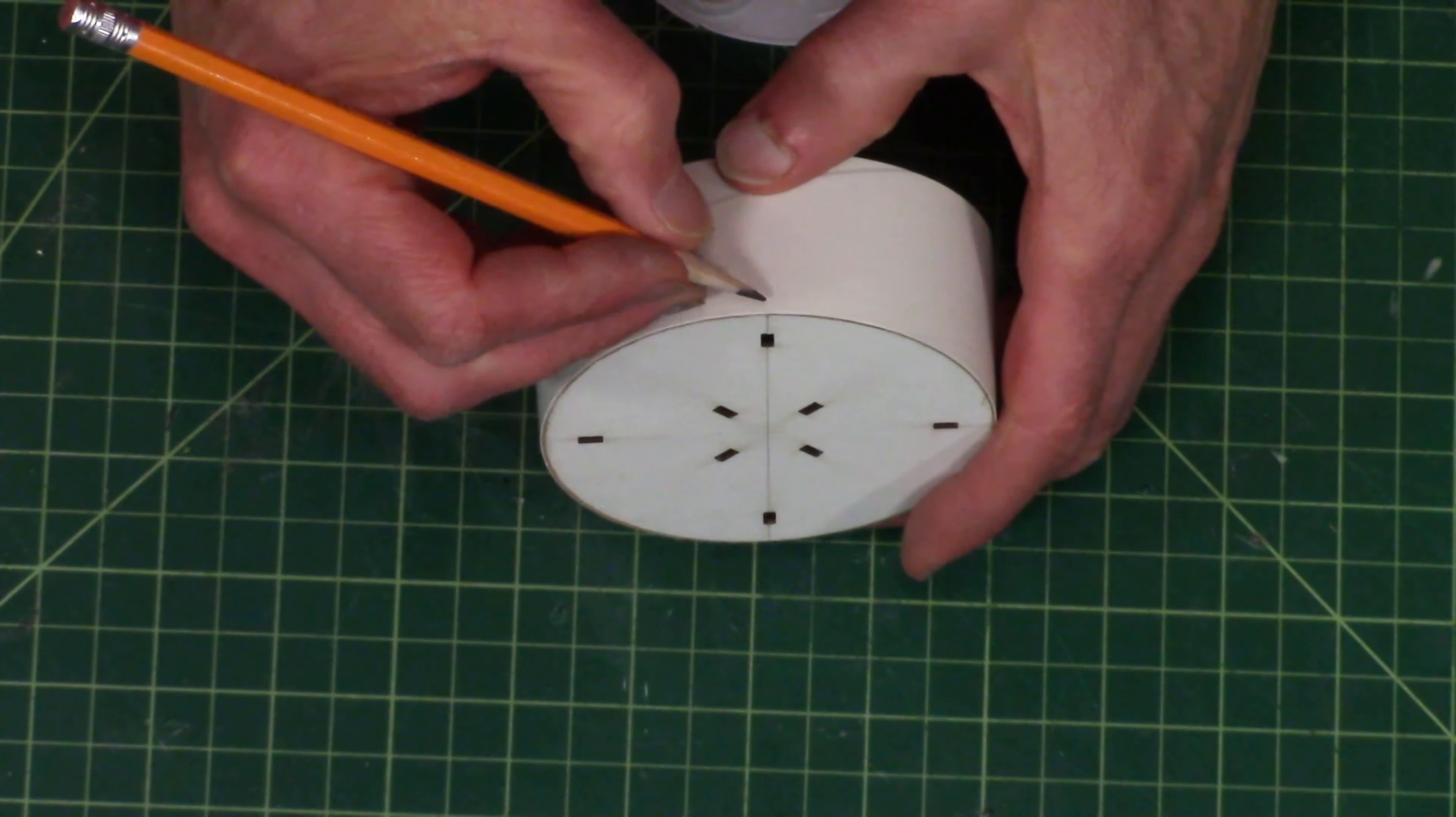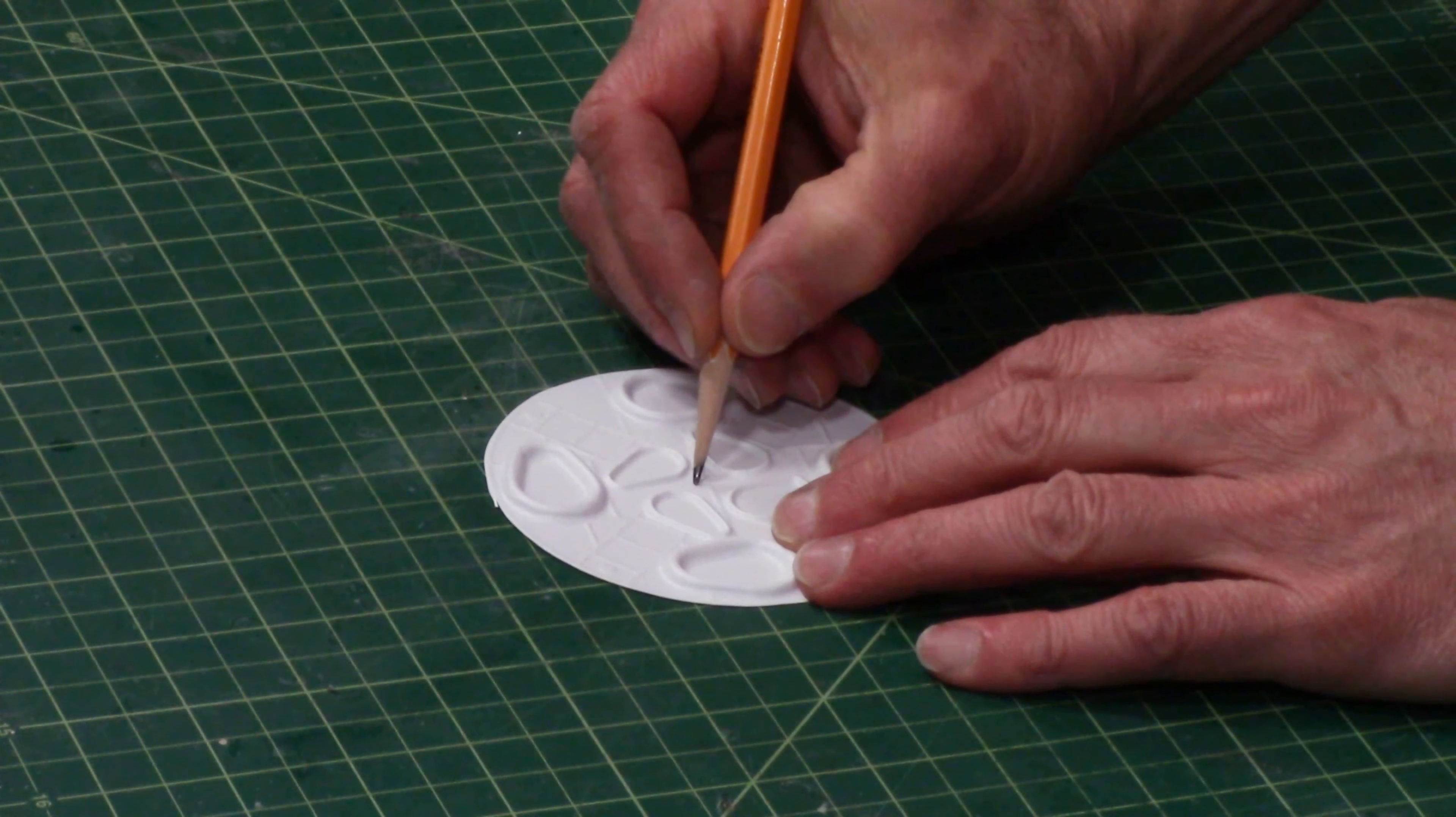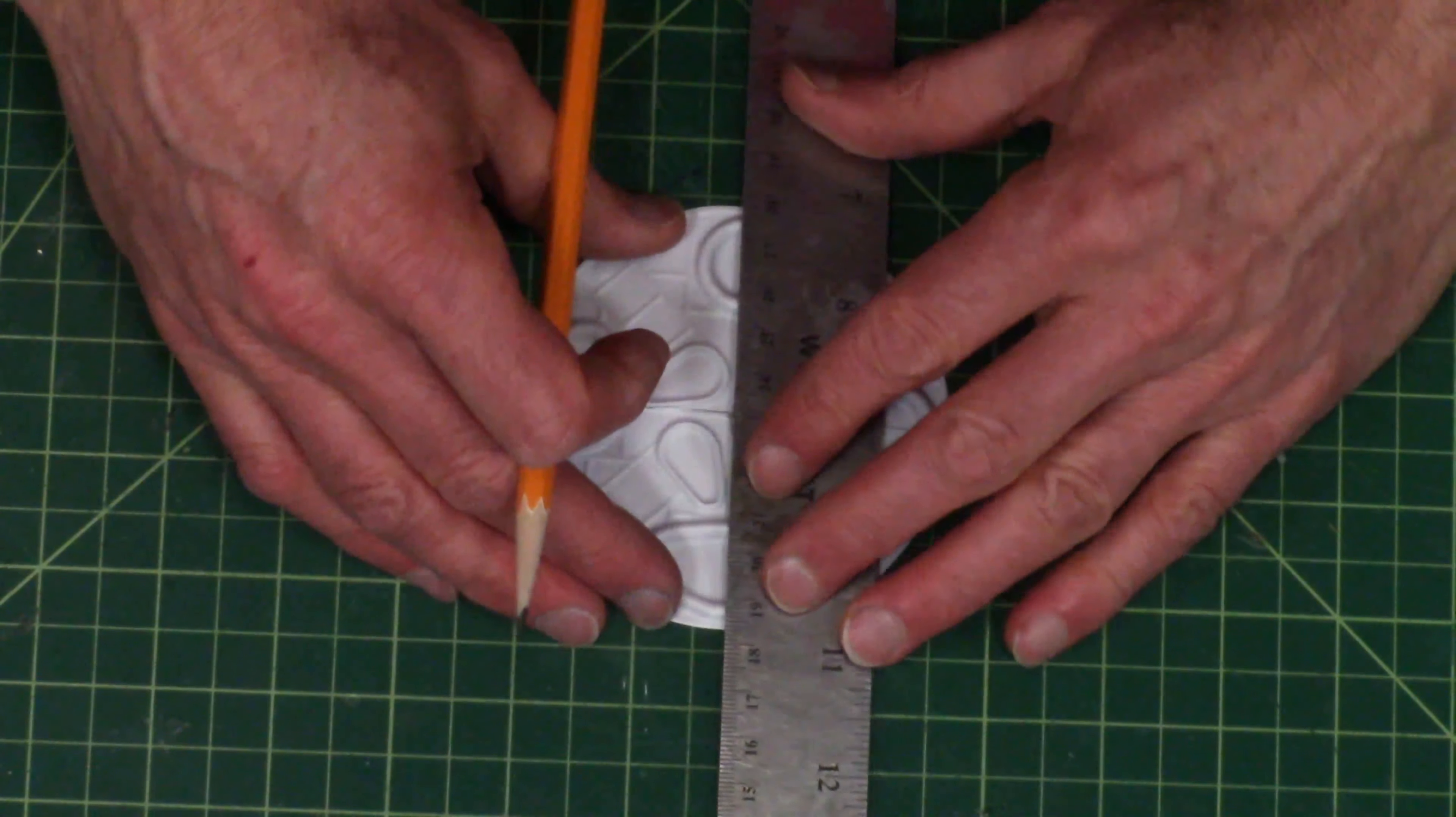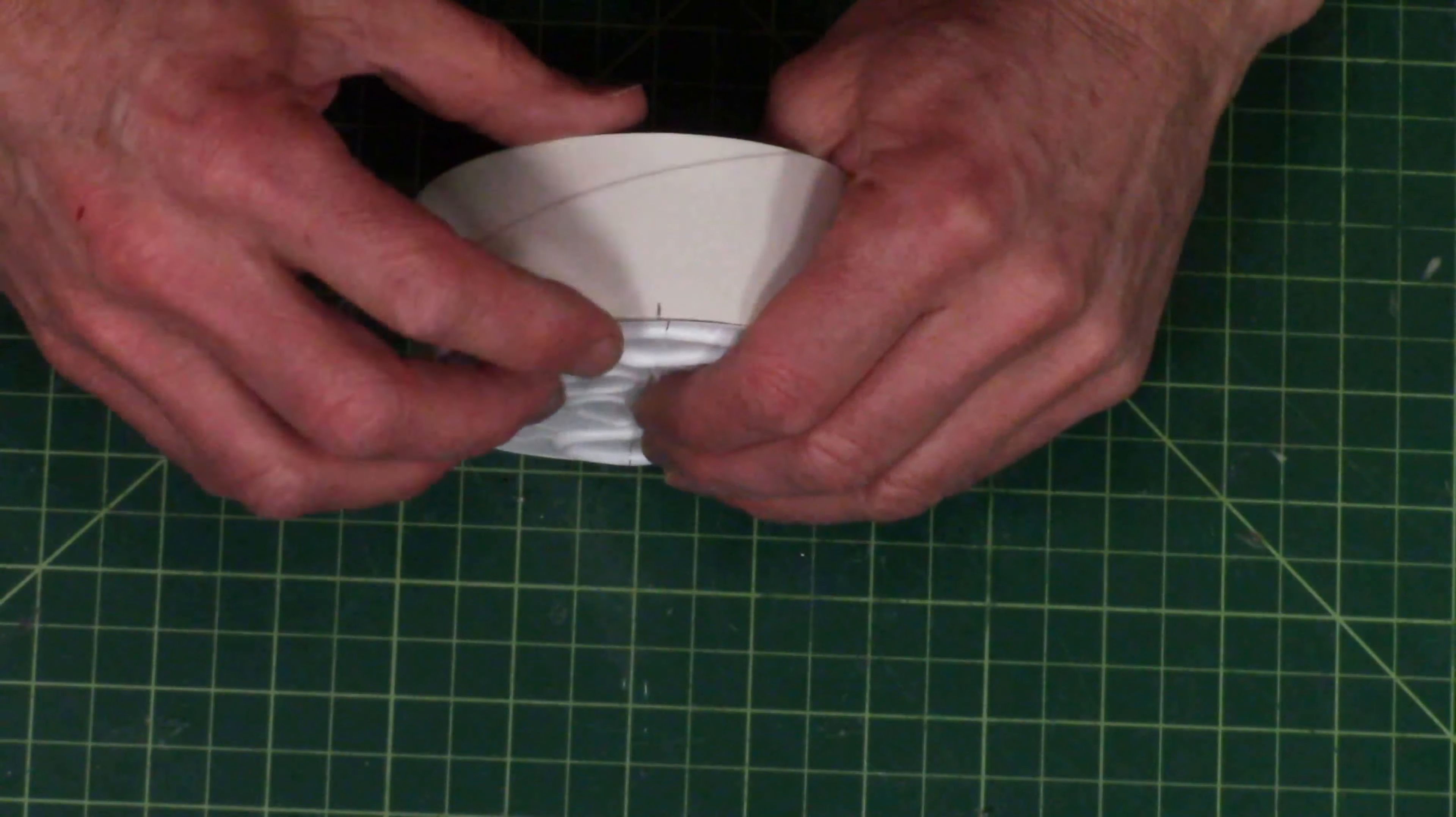And then we want to take the lines and extend them down on the side of the tube. And then on here, we want to extend this middle cross piece right here. We want to extend that all the way out to the edge of the part. And then we want to position that on the tube. And we want to make sure that our tick marks line up.